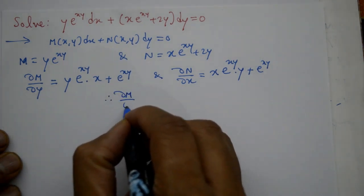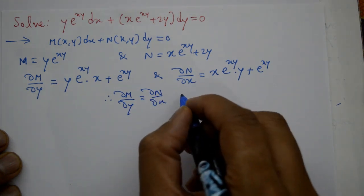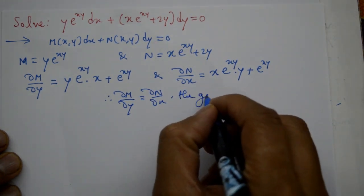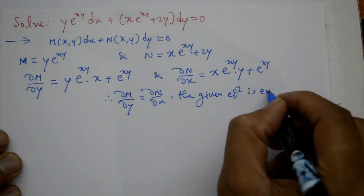So del m by del y is equal to del n by del x. What does this mean? The given equation is exact.